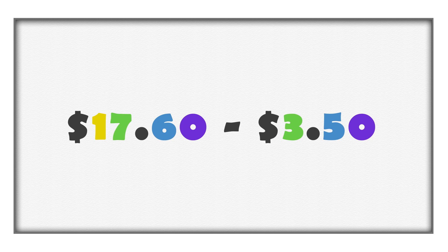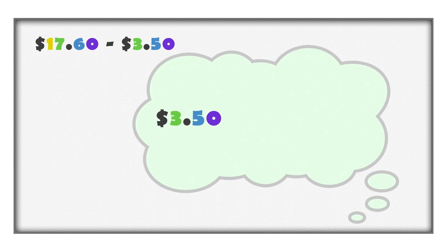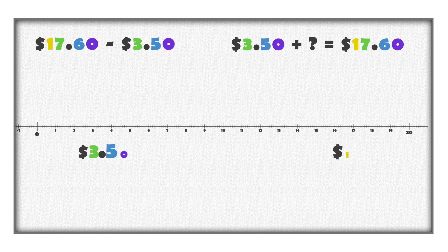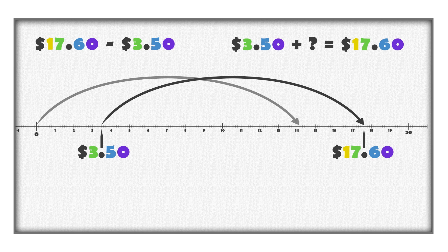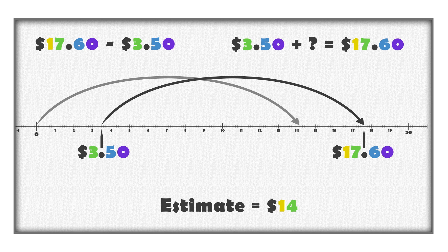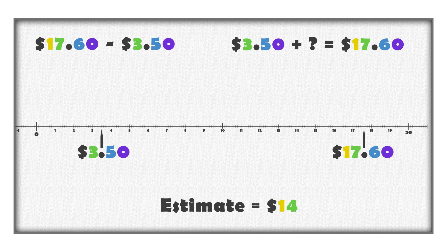It may be helpful to think of this equation as an addition question: how much do we need to add to $3.50 to make $17.60? Or, how far is it on the number line from $3.50 to $17.60? We can move the arrow to start at $0 instead of $3.50. The distance between $3.50 and $17.60 is the same as the distance from $0 to approximately $14. We can estimate the difference to be approximately $14. One way to find the distance between the values is to add on to $3.50 first to get to a whole dollar.